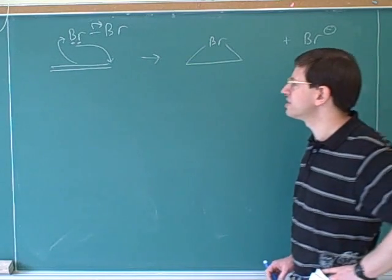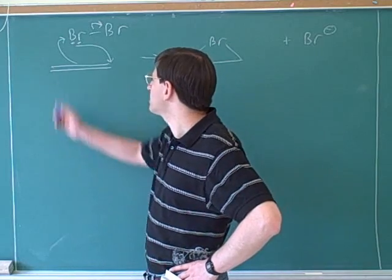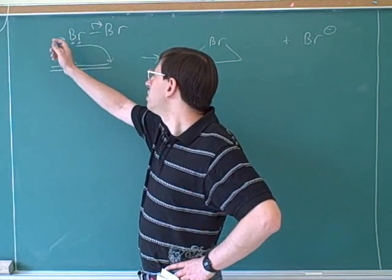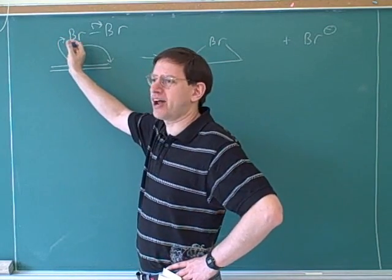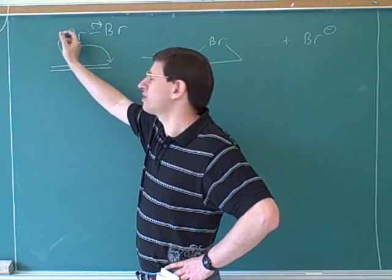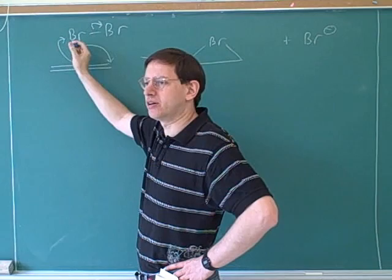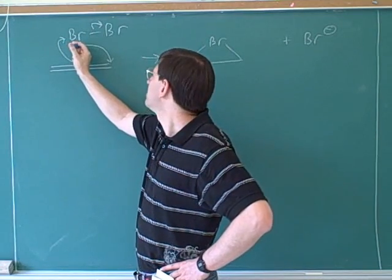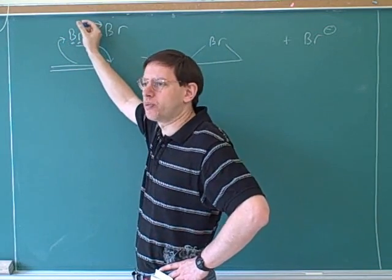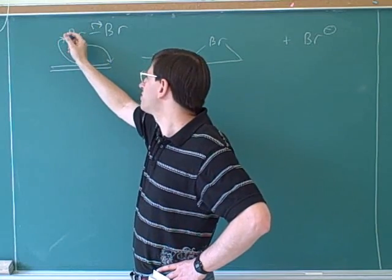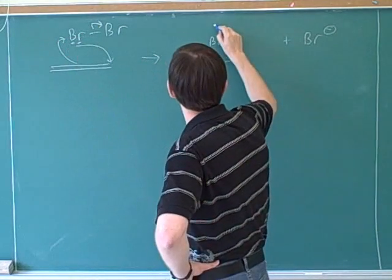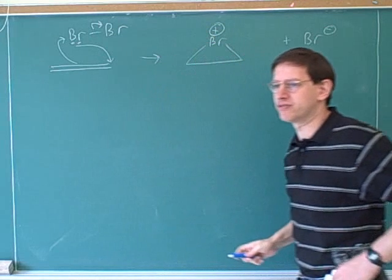What about the charges? The charges here are harder than usual to figure out but let's focus on this bromine here. Well these two arrows cancel each other out. This arrow is bringing electrons into the bromine and this arrow is taking electrons out from the bromine. So those two arrows would tend to cancel each other out but then there's a third arrow that's again taking the electrons away from the bromine. So overall the bromine is losing electrons so the bromine should end up with a positive charge.